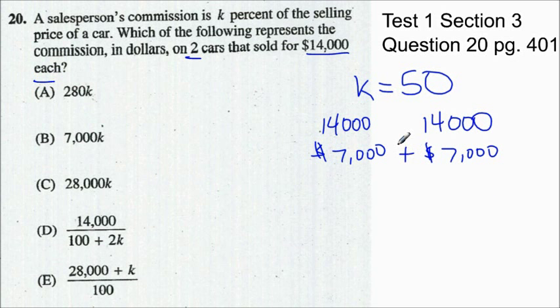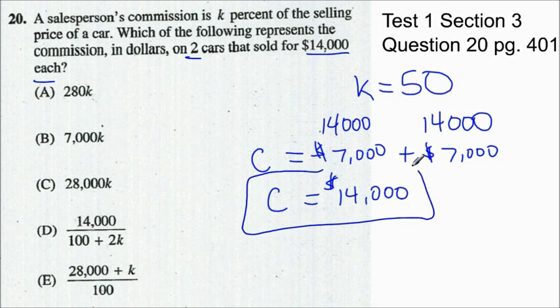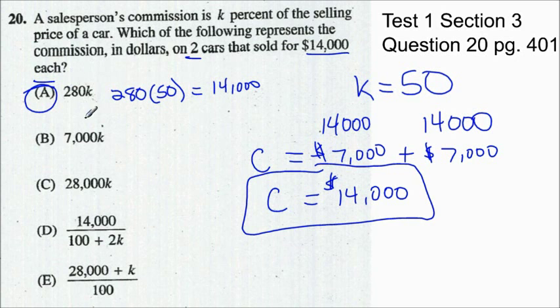So total, my total commission for the two cars, so my commission equals 7,000 plus 7,000. So my commission was a total of $14,000 when k equaled 50. So now I have to match my answer here or my choice that I substituted in for k into my answers here. So let's go ahead and test out A. So we have 280k. So 280 times 50 equals 14,000. Wow, again right off the bat answer A is the correct answer. This shows my commission on two cars that sold for $14,000 each.